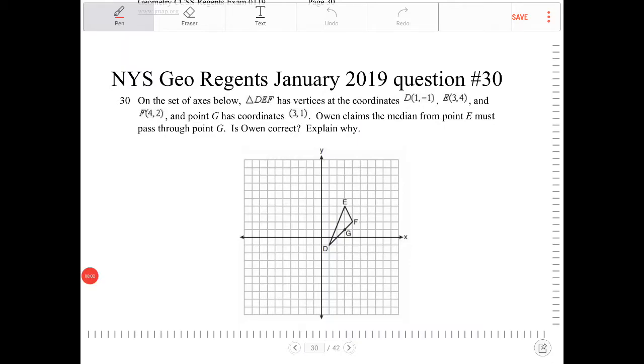On the set of axes below, triangle DEF has vertices at the coordinates (1, -1), (3, 4), and (4, 2), and point G has coordinates (3, 1).